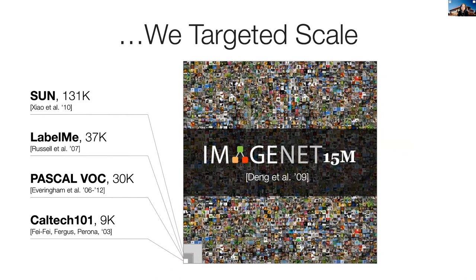In my group, my students and I took a different view. We identified that object categorization was the most important north star for computer vision at the time. So instead of giving detailed labels of images, we went for scale and created an image dataset with an order of magnitude more images and labels compared to any contemporary dataset. That was the onset of ImageNet.